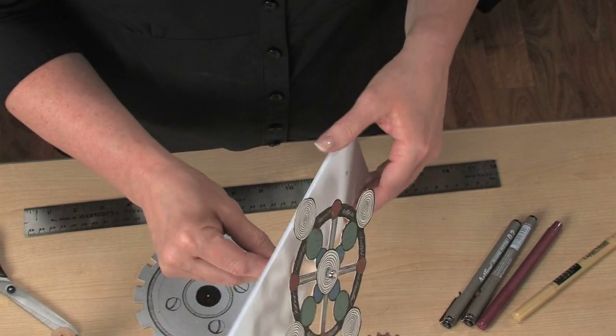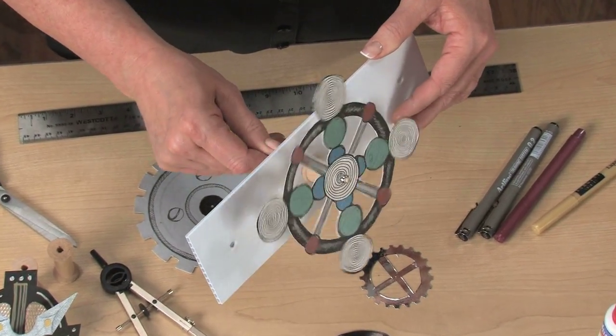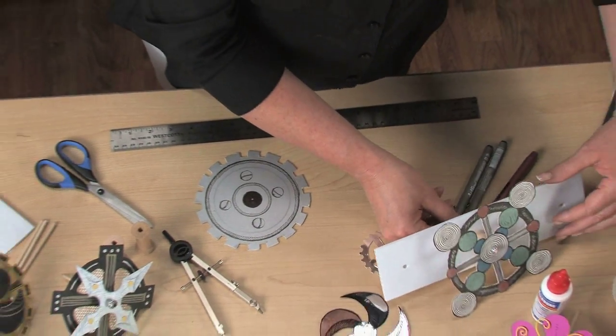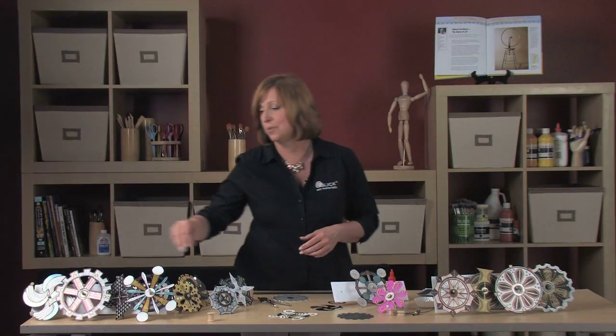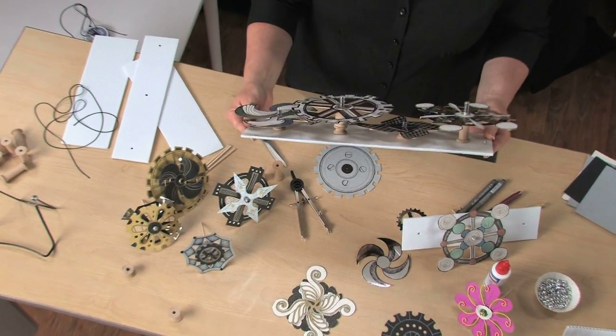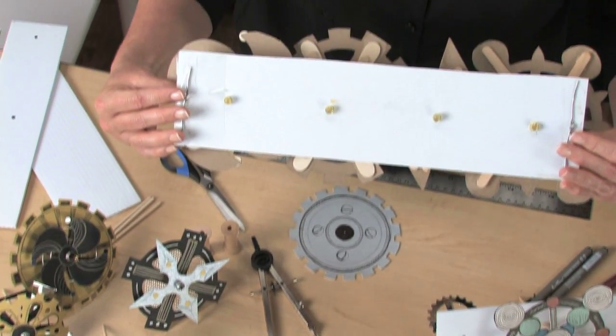You'll want the spool to sit flush against the corrugated panel, but you don't want it so tight that it can't move. Repeat this for each gear. Now let's take a look at one that's ready for some motion. As you can see, I've used a variety of spool heights and trimmed the excess length of the wooden stick on the back side.